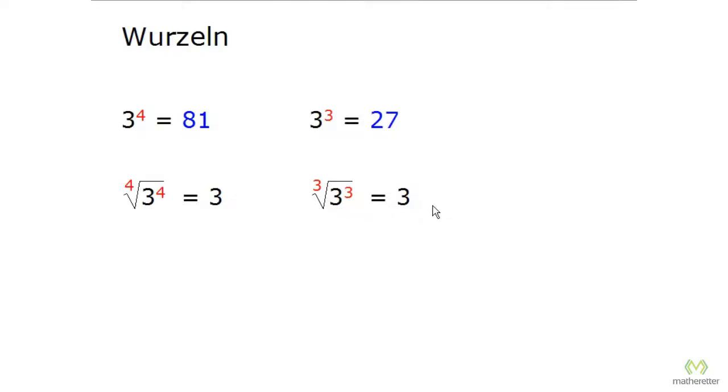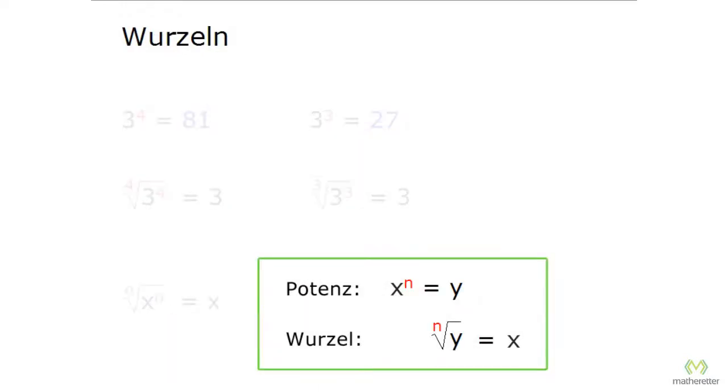Generally we can say, changing 3 to x and 4 to n, the nth root of x to the n is x. The power and root cancel each other if n has the same value. Therefore, the root is the inverse of the power. They reverse each other.